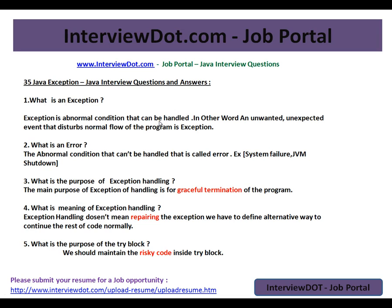What is an exception? An exception is an abnormal condition that can be handled. In other words, an unwanted, unexpected event that disturbs the normal flow of the program is called an exception. For example, in your application, you're trying to reach a mail server and it's not available, or you're trying to run a service which is down or shut down, or you're trying to read a file and the file is not available.